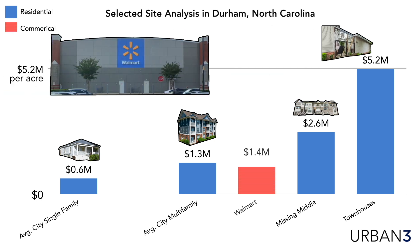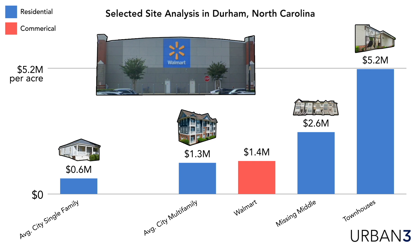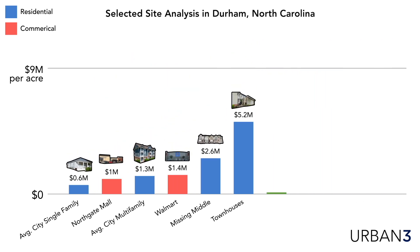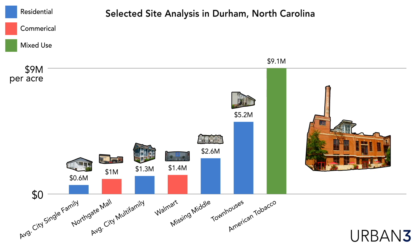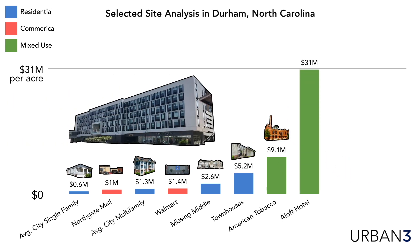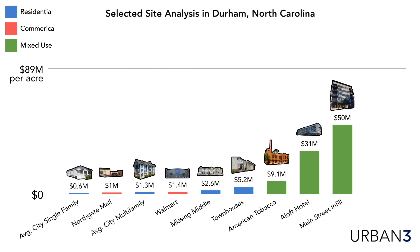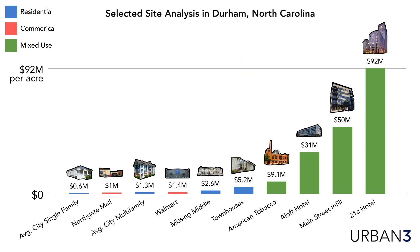Compare that against a Walmart, which comes in at about $1.4 million — about a quarter the value of a townhouse. The mall is actually less than Walmart at about $1 million an acre. But mixed-use downtown developments — like a retrofitted old tobacco building — pull about $9 million an acre, roughly nine times a Walmart. A hotel comes in at $31 million an acre, and the most productive buildings reach $50 to $92 million per acre, dwarfing the single-family house at only $600,000.